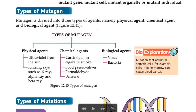The types of mutagen — remember, mutagen is a substance that causes mutation. There are three types: first, physical agent; second, chemical agent; and third, biological agent. Physical agents include ultraviolet from the sun, X-rays, alpha rays, and beta rays. Chemical agents include carcinogens in cigarettes, food preservatives, and so on. Biological agents that cause mutation are viruses and bacteria.